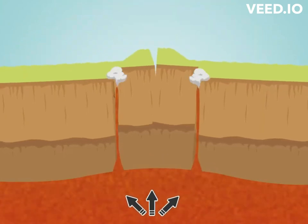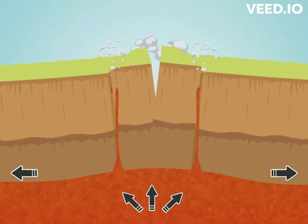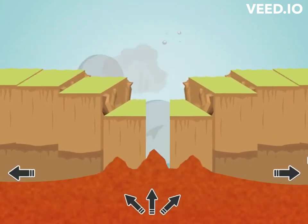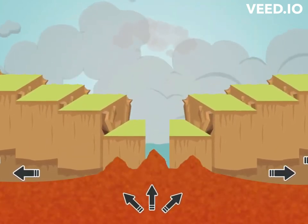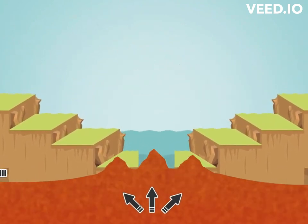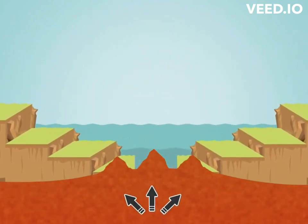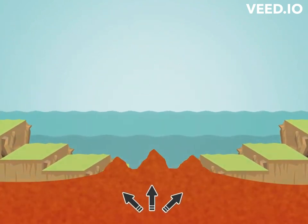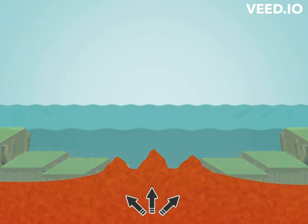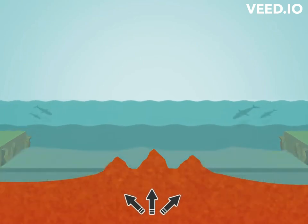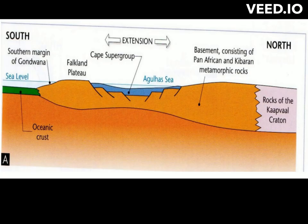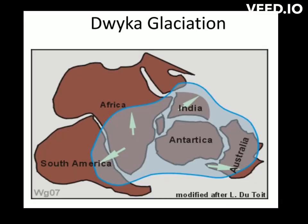Due to plate tectonics and tectonic deformation — faulting and folding — the basement rocks had planes of weakness or fractures. Because of the effect of convection cells, the crust thinned out due to extension, creating an inland sea termed the Agulhas Sea, which was filled by waters from rivers flowing towards the sea. The first sediments deposited within this inland sea formed the Cape Supergroup sediments.